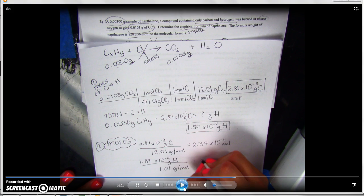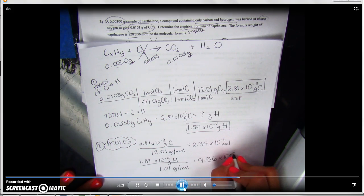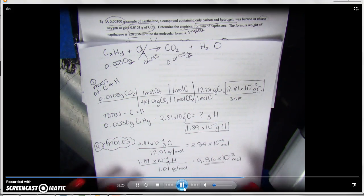And so, as you can see, dividing each one by its molar mass, we found carbon to be 2.34 times 10 to the negative 4 moles. And we're going to find that hydrogen is 9.36 times 10 to the negative 5 moles.